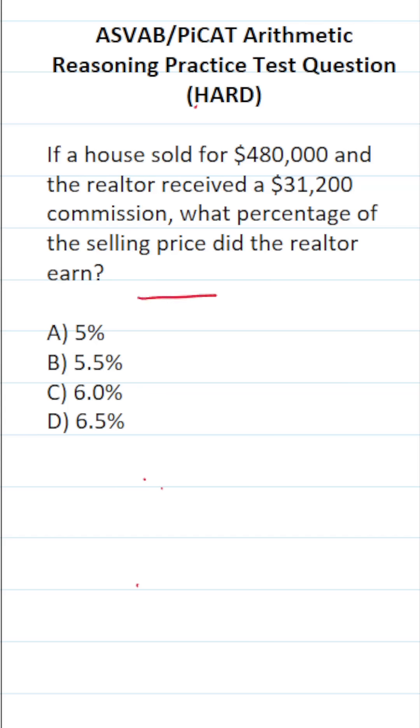So in this case, we're going to take the fraction $31,200 over $480,000, reduce it as much as possible, and then convert it to a percent. And I want to point this out. Anything over 100 can be quickly converted to a percent mentally. So 5 over 100 is simply 5%, 2 over 100 is 2%. We're going to use this fact later on.